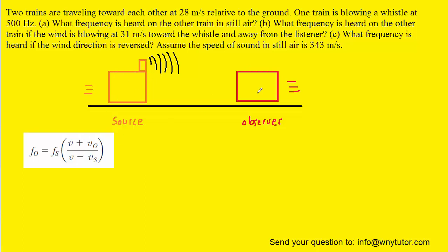V is the speed of sound which was given to us in the question as 343. And then V0 is the speed of the observer. Vs is the speed of the source.